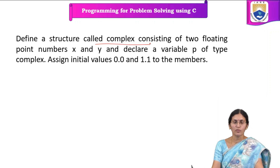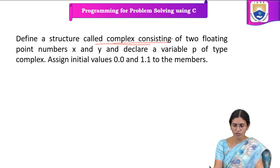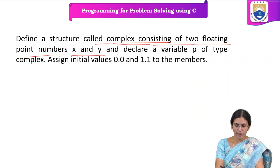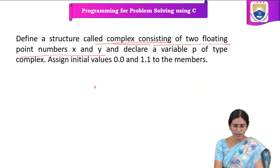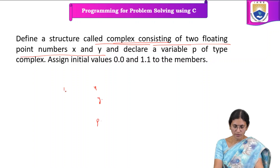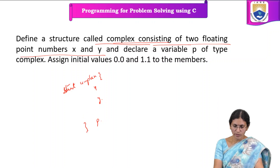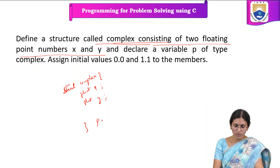The next program is to define a structure called complex, consisting of two floating point numbers. We have two floating point numbers x and y, and we declare a variable p of type complex. The type of this structure is complex, and it has two float members: float x and float y. We are going to declare a variable p of type complex in this way.